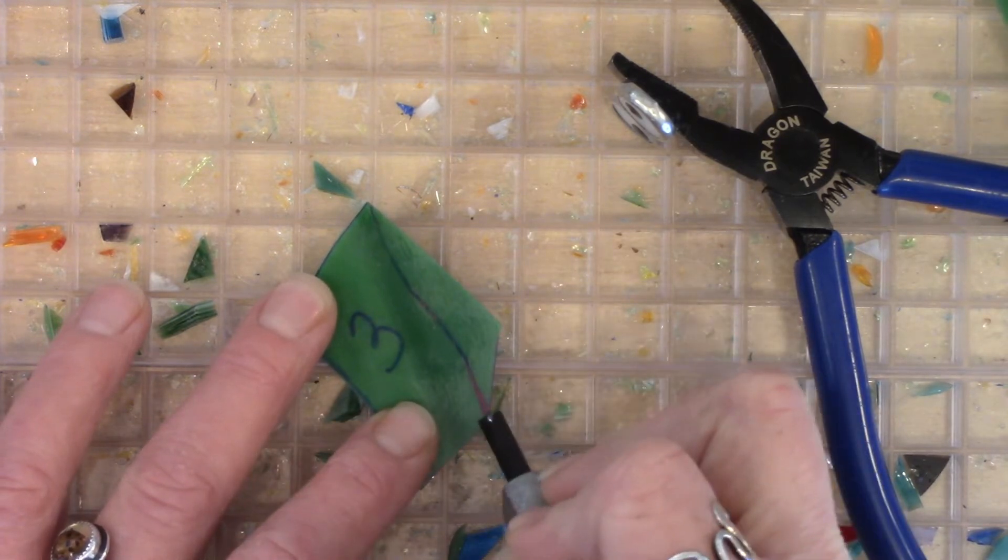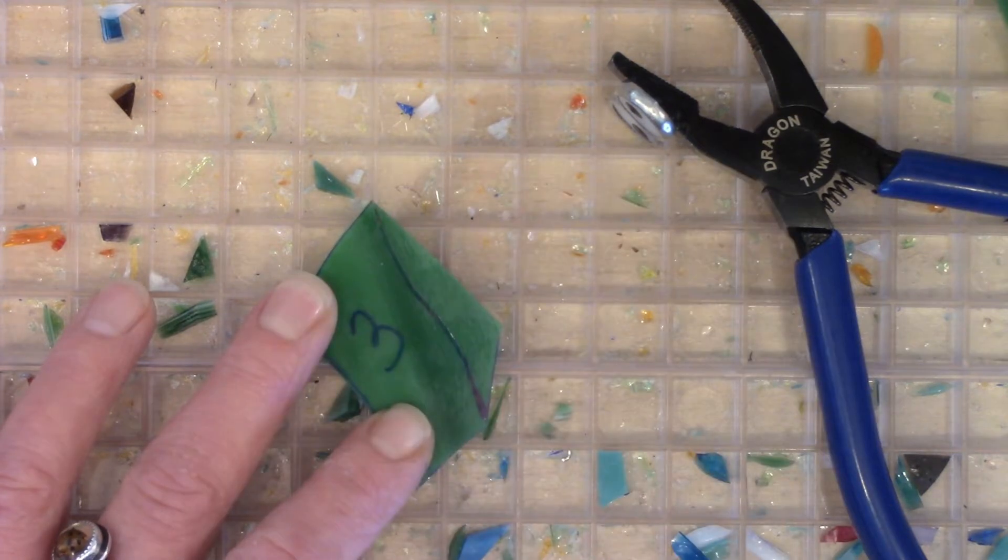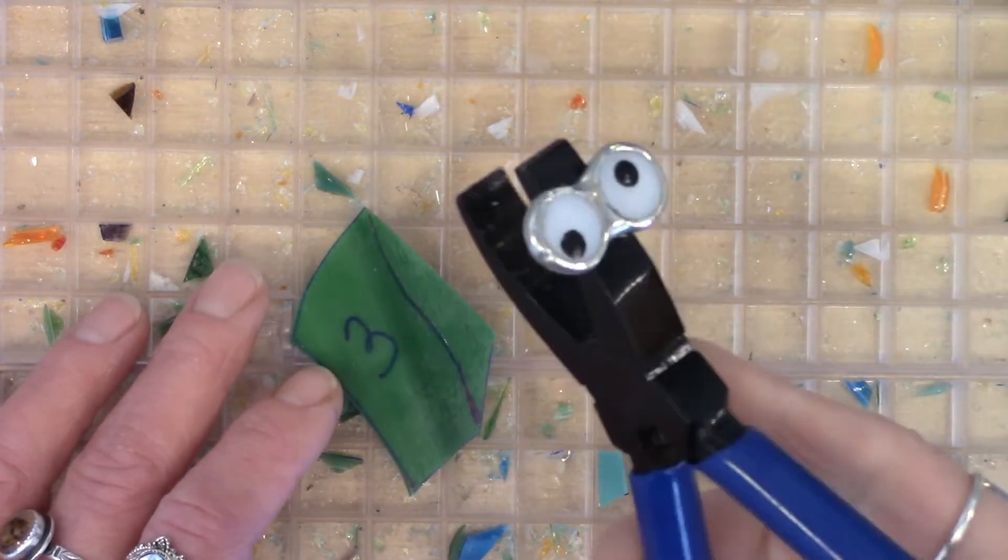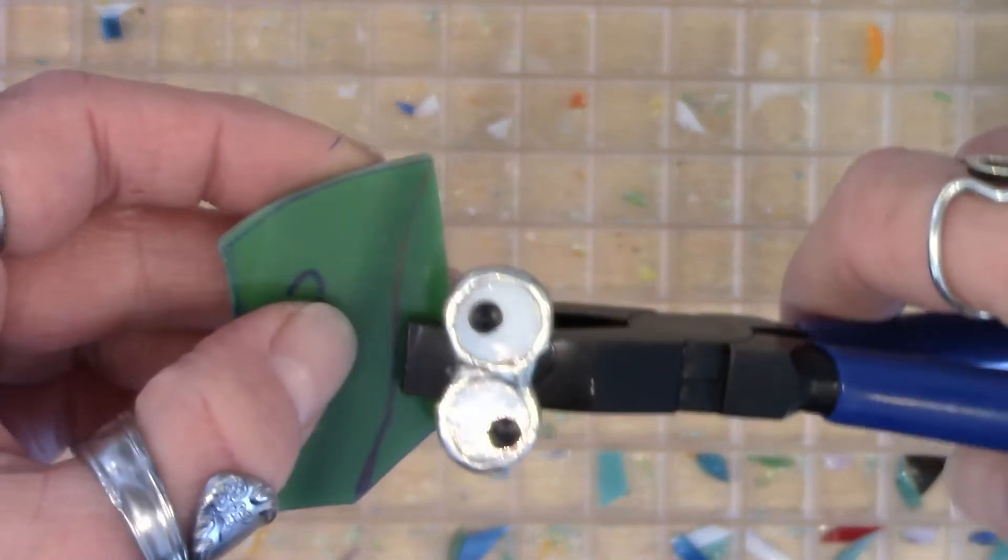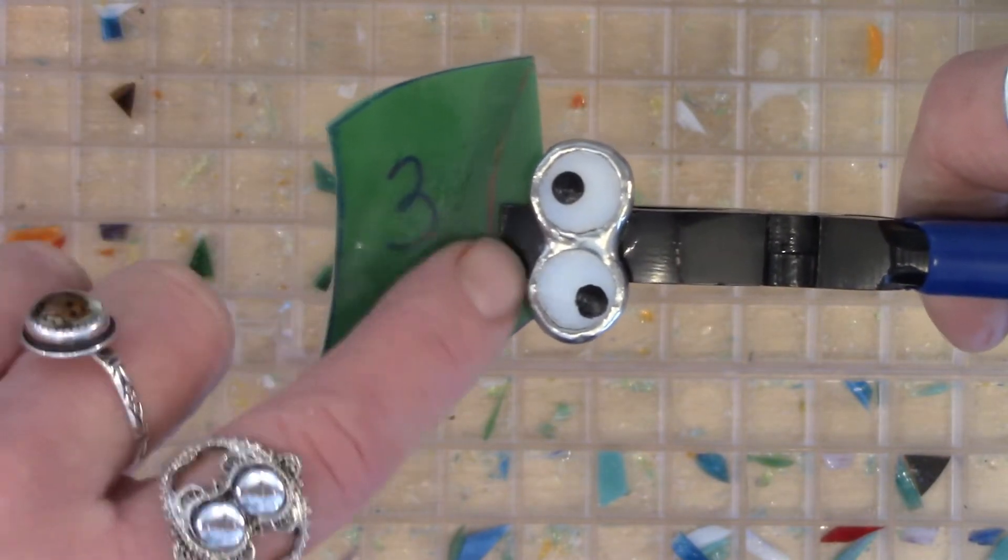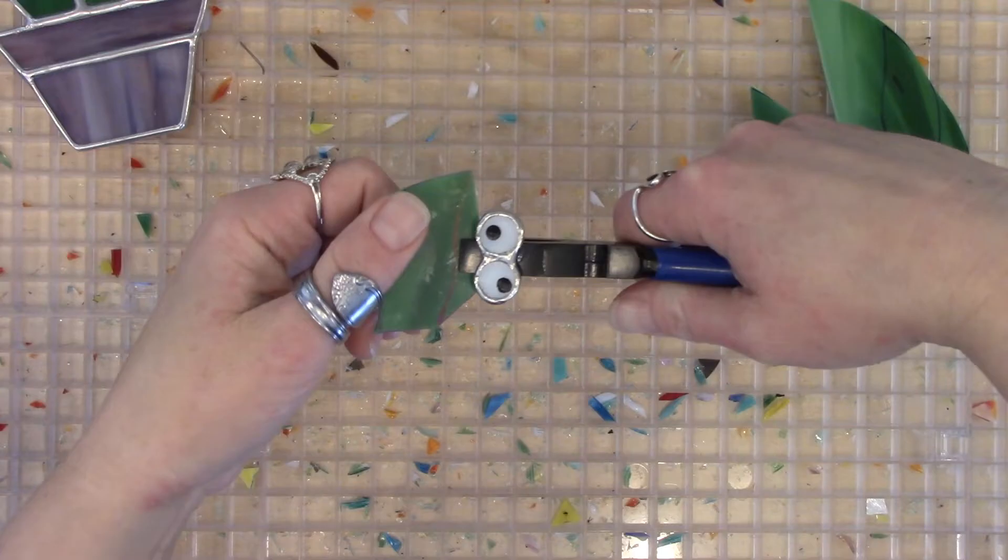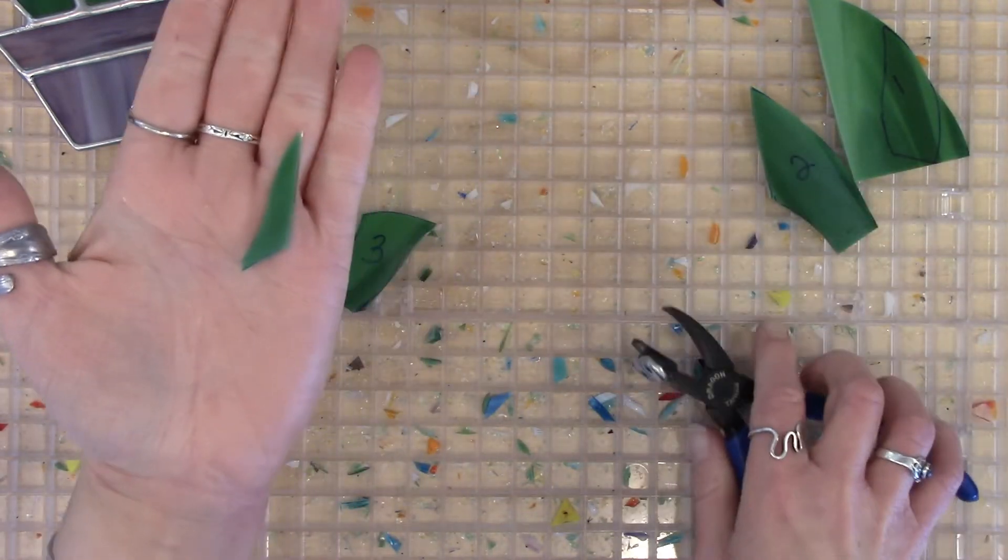First you want to score your glass like you normally would. Grab your pliers, remember you want to have the straight side up. You're going to place it on the outside of your score line and make sure that you have your thumb on top. Down and out and there you go.